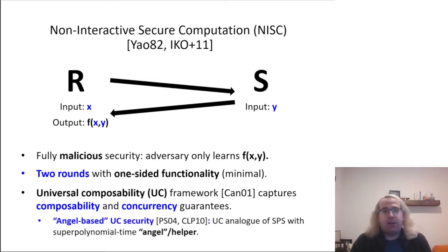Furthermore, there exists an analog of superpolynomial time simulation for UC security, known as angel-based or oracle-aided UC security, that preserves both the composability and concurrency guarantees. Specifically, it allows the simulator and environment both access to a superpolynomial helper or oracle, or angel, but otherwise restricts them to polynomial time.